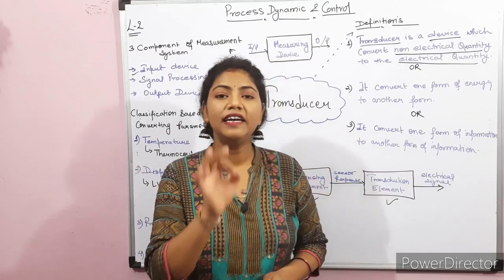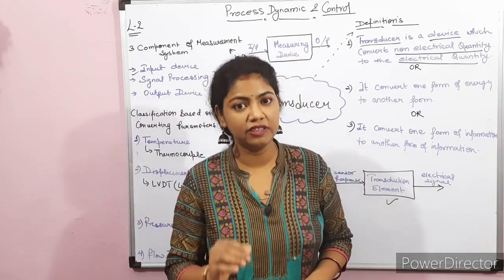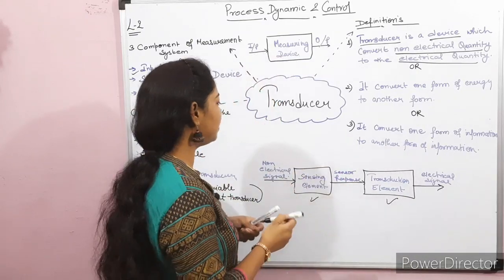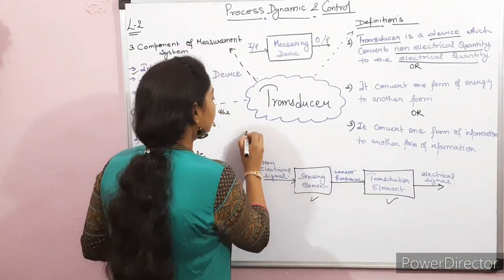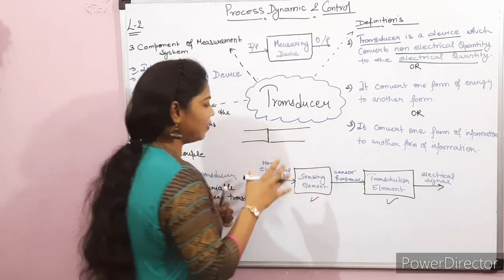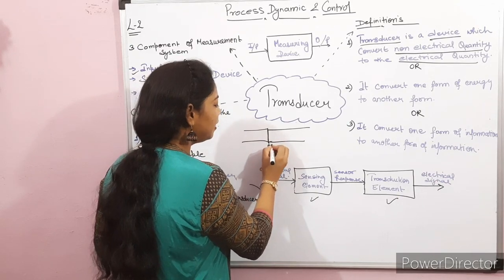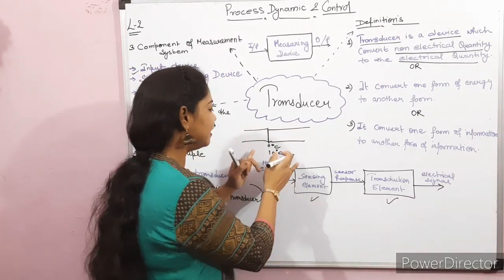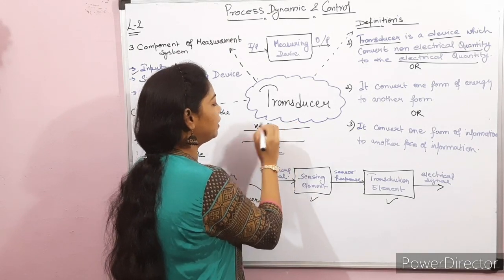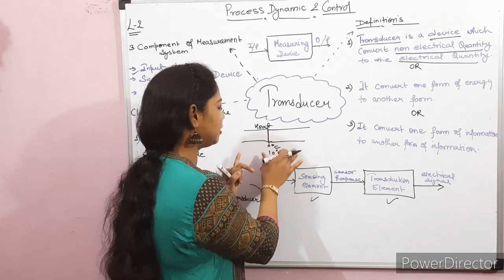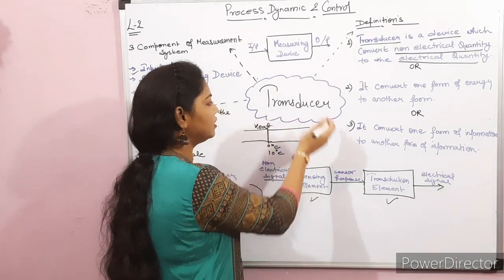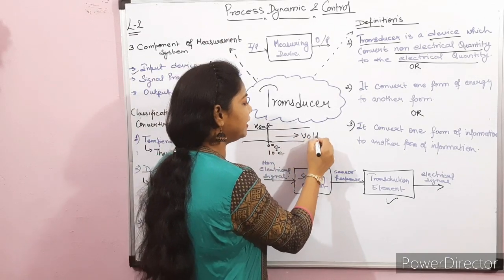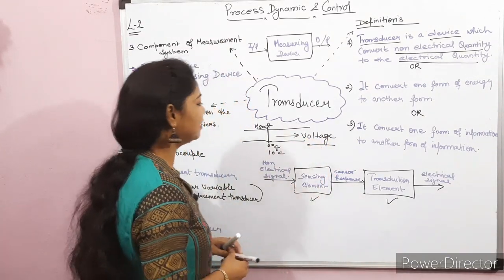A simple and widely used example of a transducer in industry is the thermocouple. A thermocouple works on the principle of EMF, with two different metals in physical contact. When a temperature difference is applied — say 0 degrees centigrade and 10 degrees centigrade — heat is generated. The thermocouple converts this heat energy, which is one form of energy, into voltage. So the transducer converts thermal energy to an electrical signal (voltage).